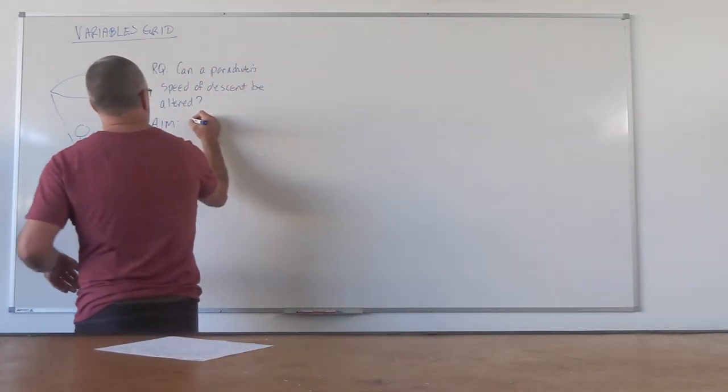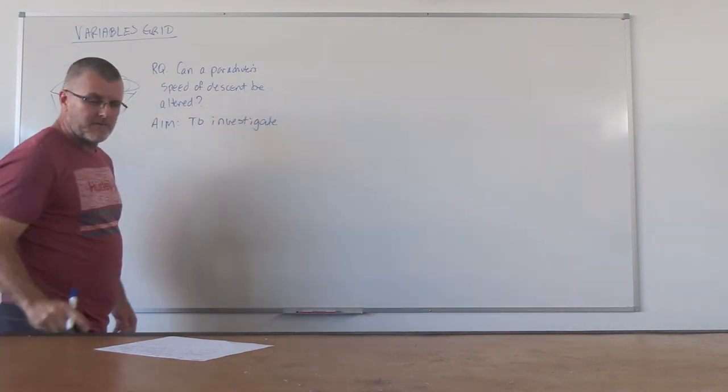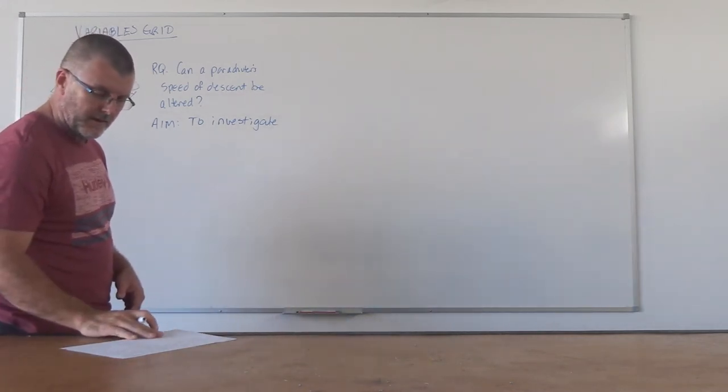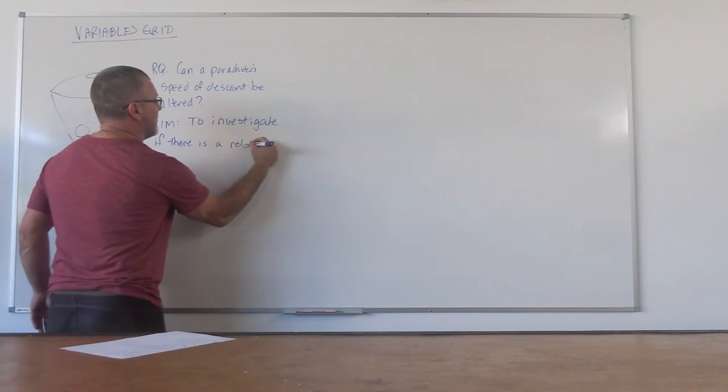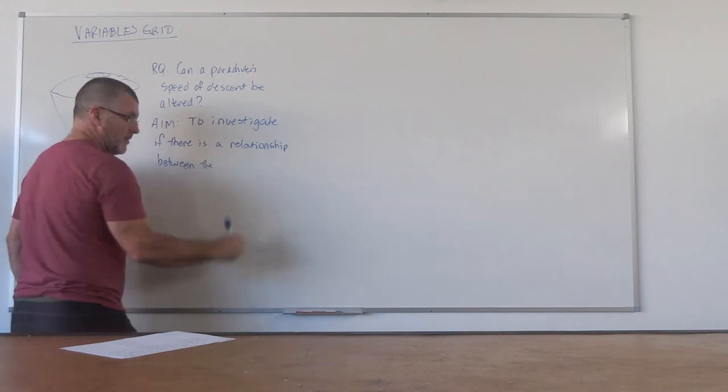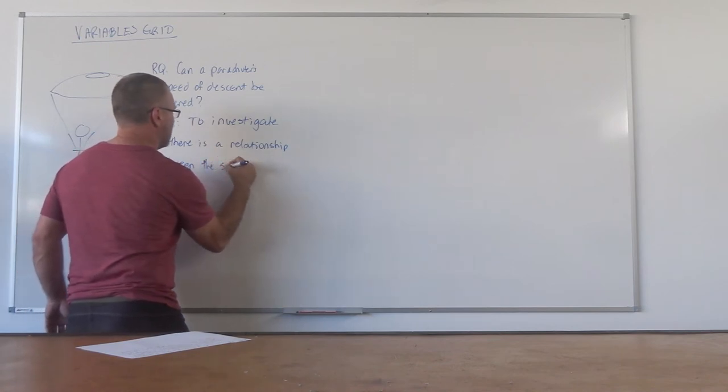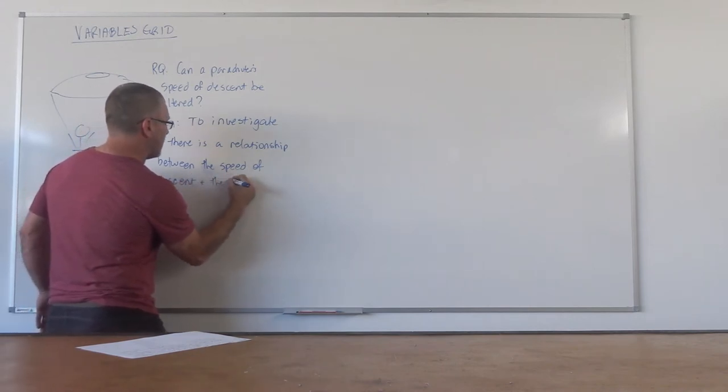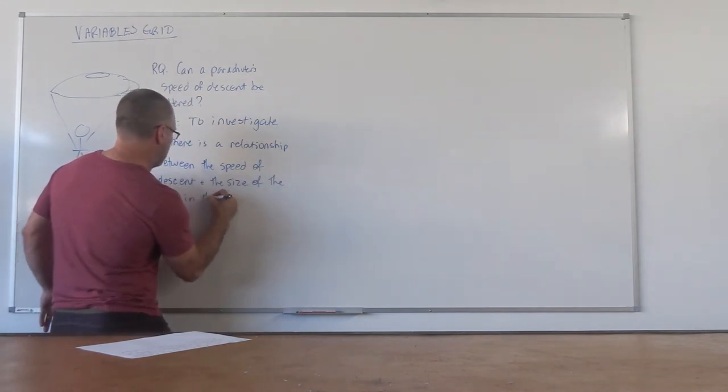So the aim for this one is to investigate - remember we always start an aim with 'to investigate,' 'to determine,' 'to see,' that sort of language. If there is a relationship between the speed of descent and the size of the hole in the chute.